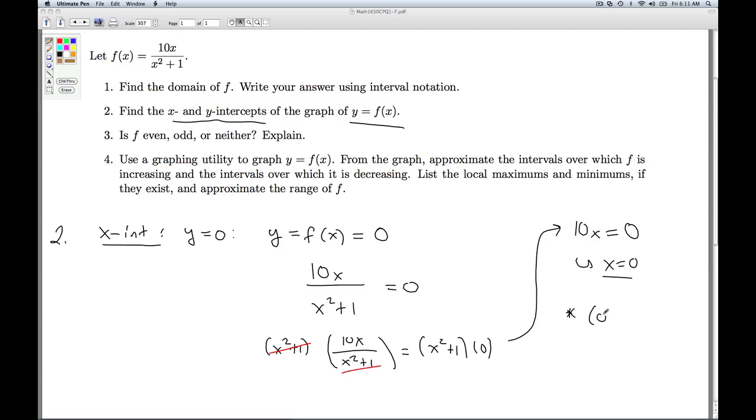So this tells me that the x-intercept is 0, 0. Now, at this point, 0, 0 is not only a point on the x-axis, it's also on the y-axis. And since functions can only have one y-intercept, we actually know this is the only y-intercept. But it doesn't hurt to double-check.